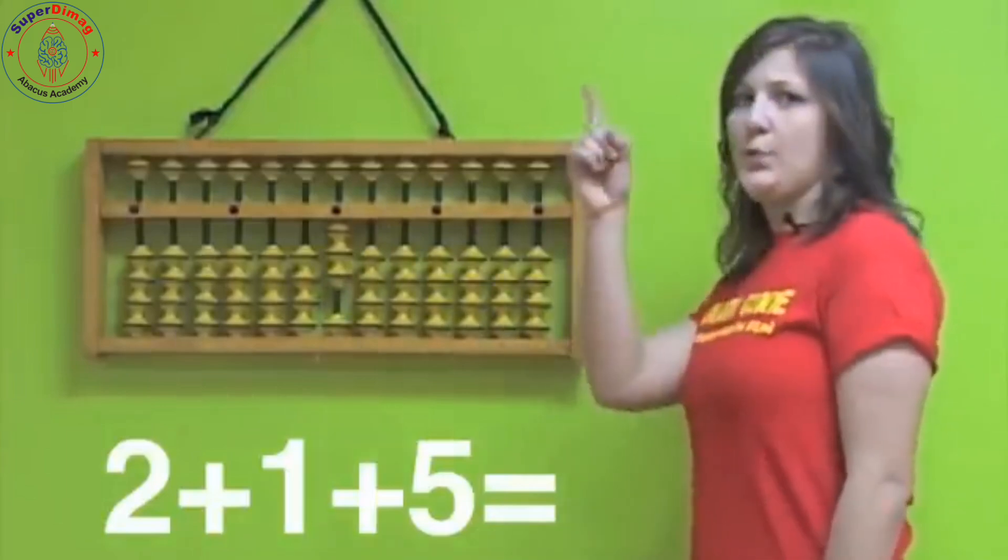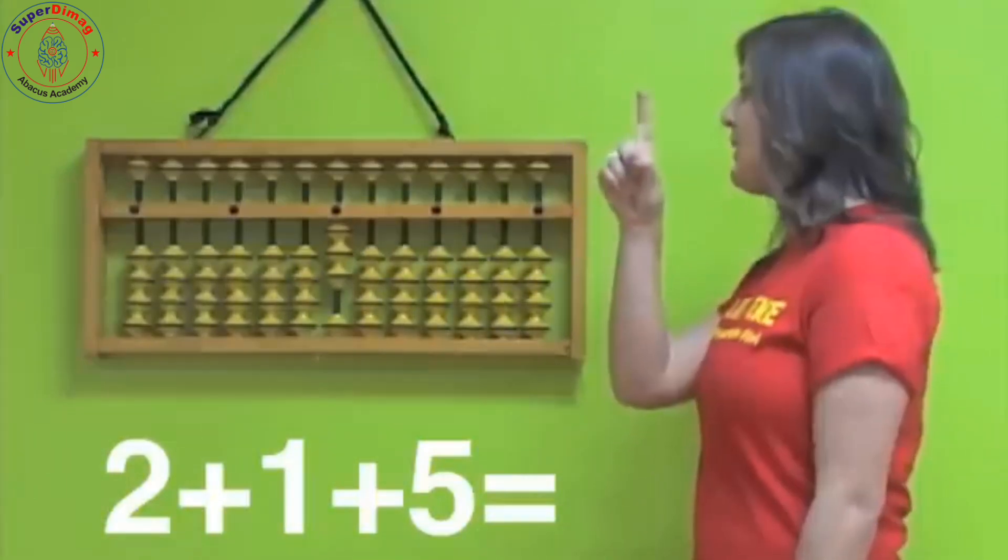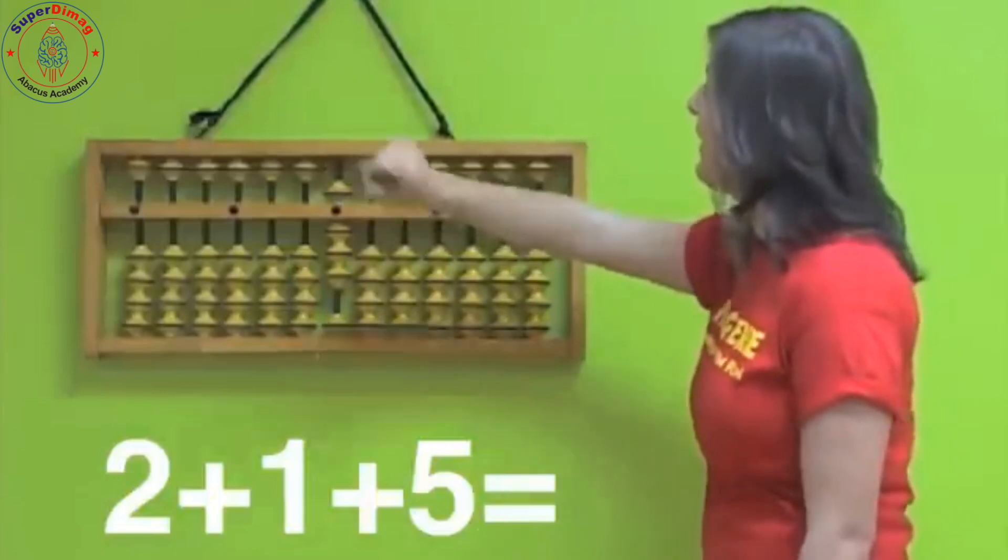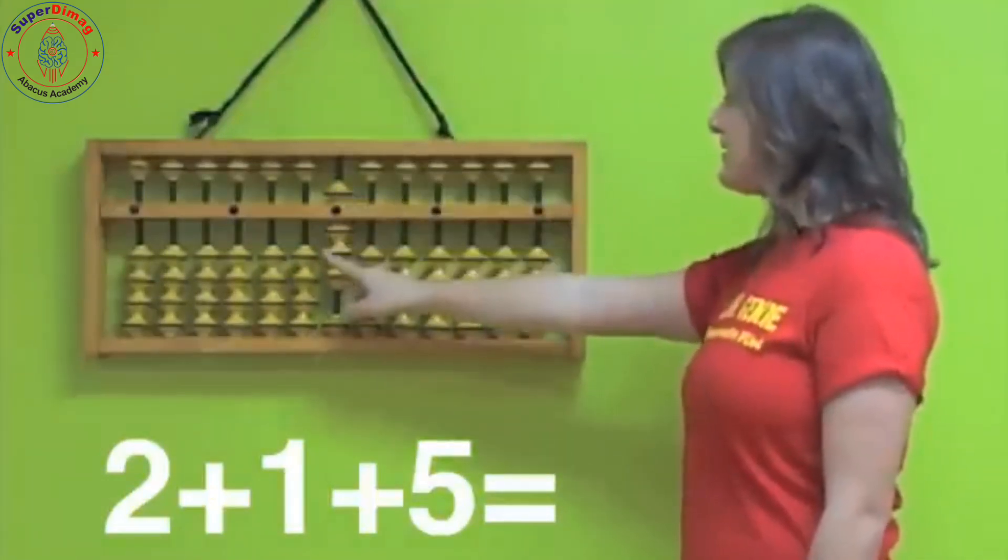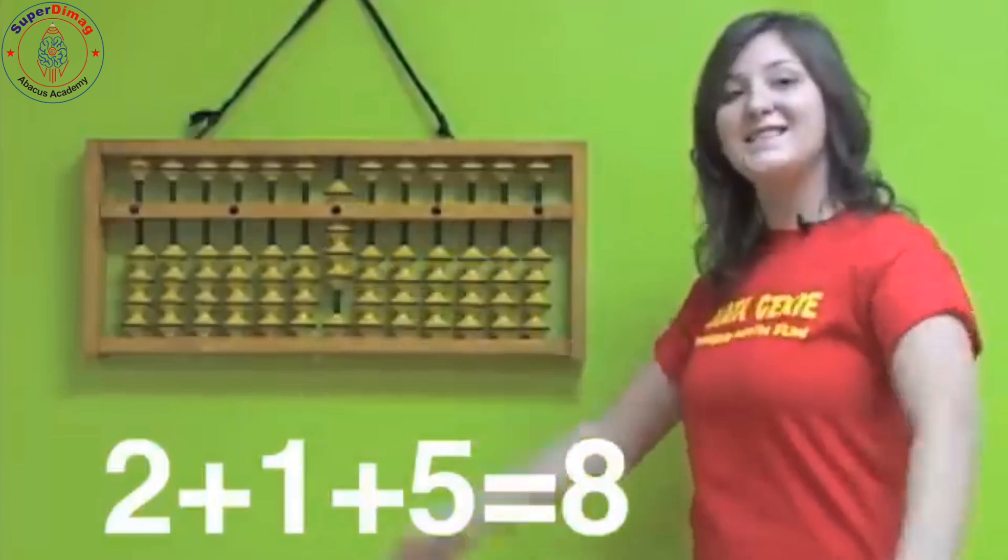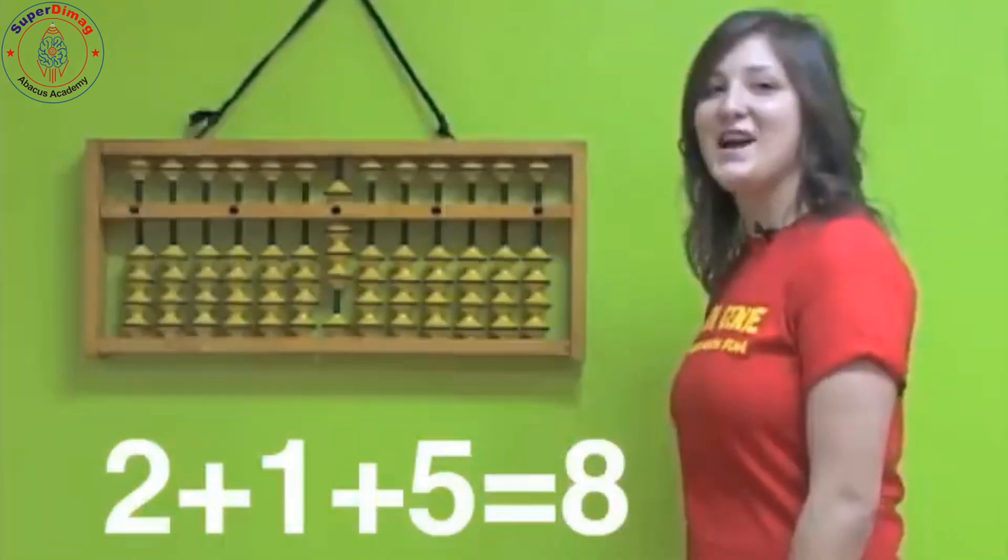Now do I use my pointer or my thumb to add five? I'm going to use my pointer on top and I'm going to add five. What is our answer? Five, six, seven, eight. Eight. You're a genius. Very good job.